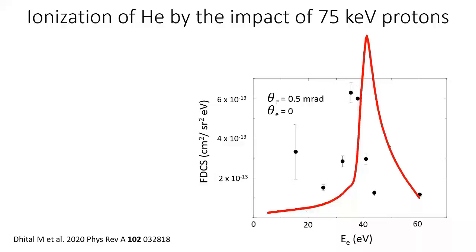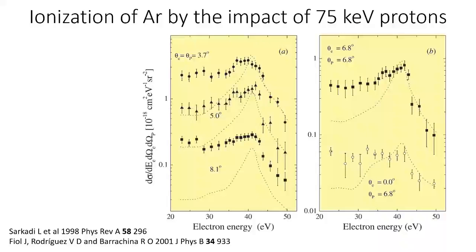The reason lies in the impact parameter approximation, which assumes that the projectile follows a classical straight line trajectory. We are currently making the C3 calculations for that case. In these figures, we changed the target from helium to argon and increased the deflection angle of the projectile. The experimental results were obtained by our colleagues from Deversen. The proton and the electron end up at the same angle at 3.75, 6.8, and 8.1 degrees. Laszlo-Schorkody used the broken line approximation, replacing the straight projected trajectory with two asymptotes. This improves agreement but is clearly not enough. An attempt with a hyperbolic trajectory was also made, but the result was not better and, as far as I know, was never published.